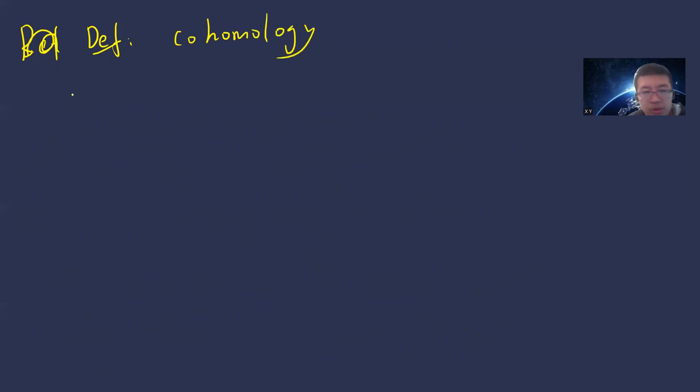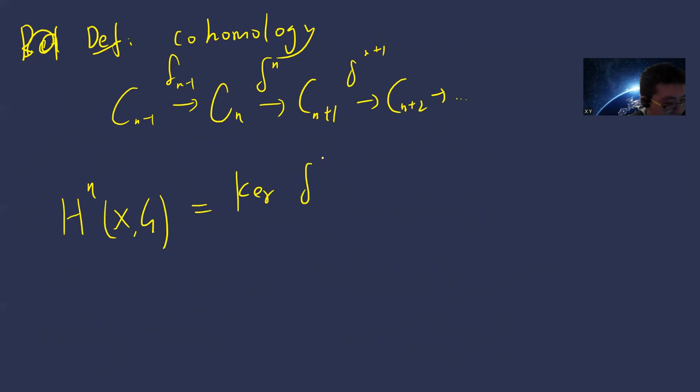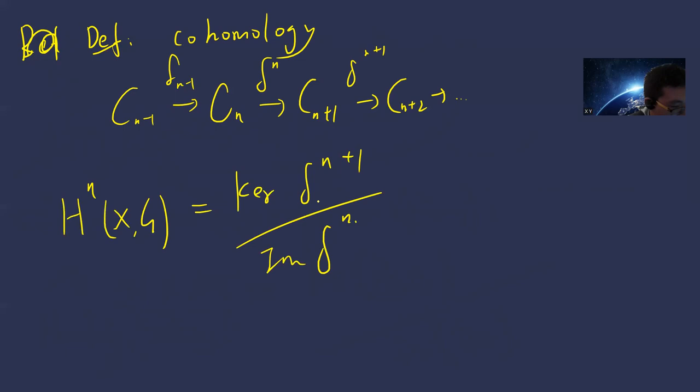Similarly, cohomology is defined for a cochain complex where the indices keep increasing and the maps are δₙ. The n-th cohomology Hⁿ(X; G) is defined as the kernel of δₙ₊₁ modulo the image of δₙ. Any chain or cochain complex of modules admits such homology or cohomology groups.